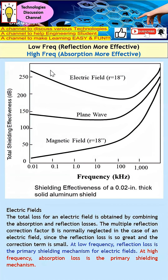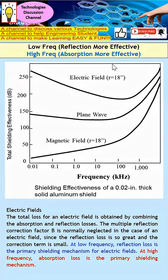At lower frequency, shielding is dominated by reflection. However, at high frequency, absorption loss becomes the primary shielding mechanism. You can see that at higher frequency, the shielding effectiveness is contributed by absorption. So this is essentially how shielding against an electric field works.